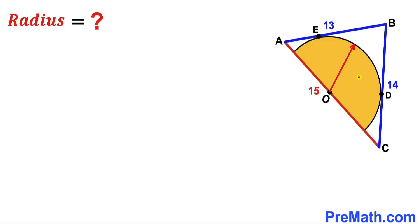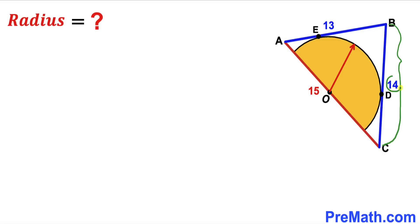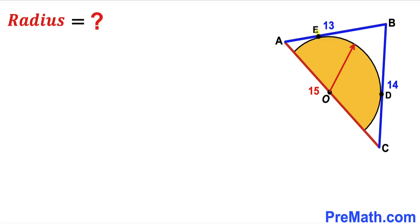In this video we have a yellow semicircle with the center fully inscribed in triangle ABC, such that side length AB is 13 units, side length BC is 14 units, and side length AC is 15 units. Points E and D are the points of tangency, and our task is to calculate the radius of this semicircle.